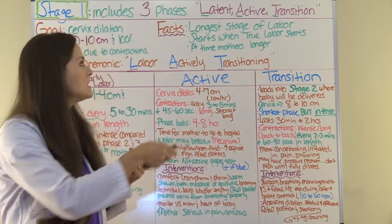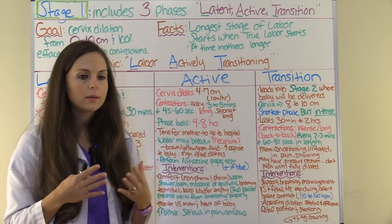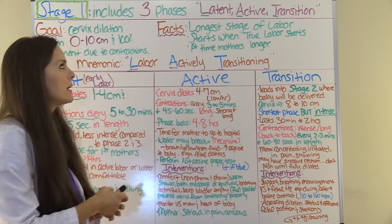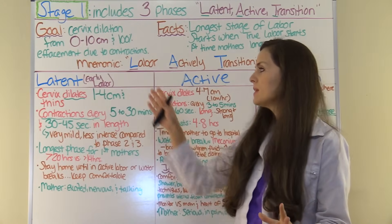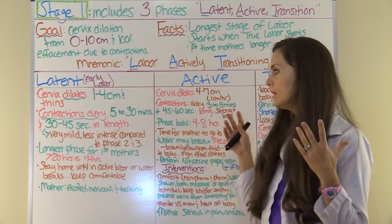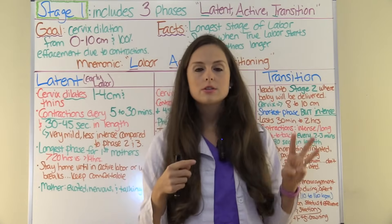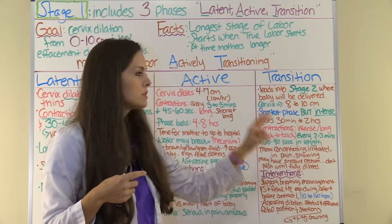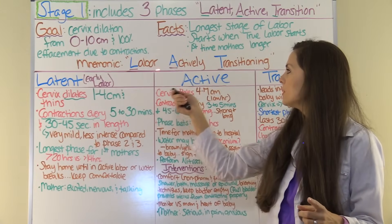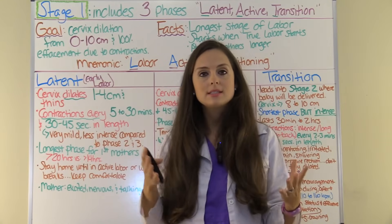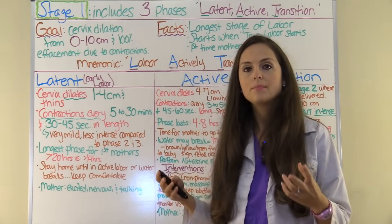Stage one is the longest stage of all the stages of labor, and it tends to be longer for first-time mothers. It starts when true labor starts. Remember that stage one has three phases, and you should know the name of each phase, what happens in terms of cervical dilation, your interventions, and the order of them. To help you remember the order, use this mnemonic: Labor Actively Transitioning — because labor is transitioning to stage two, where the baby will be born.